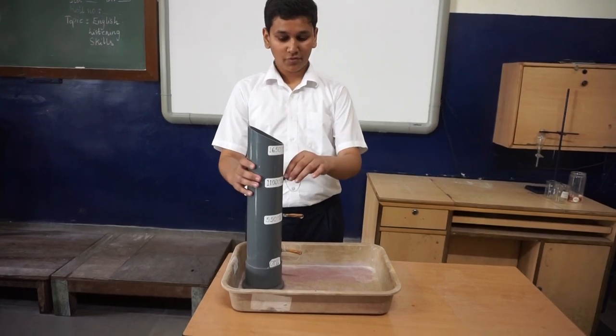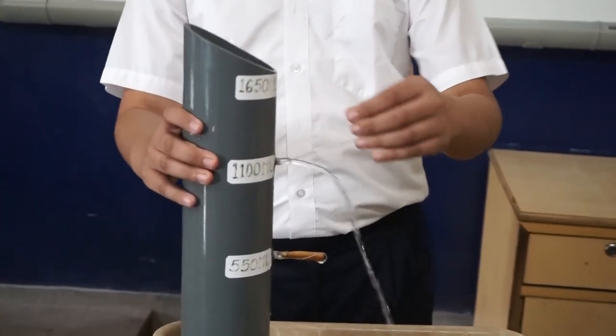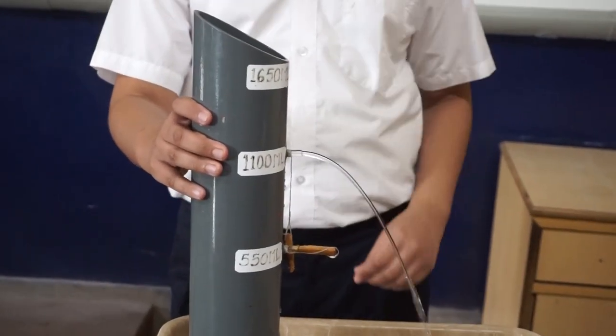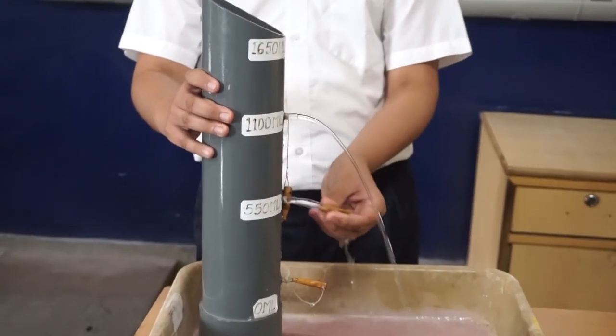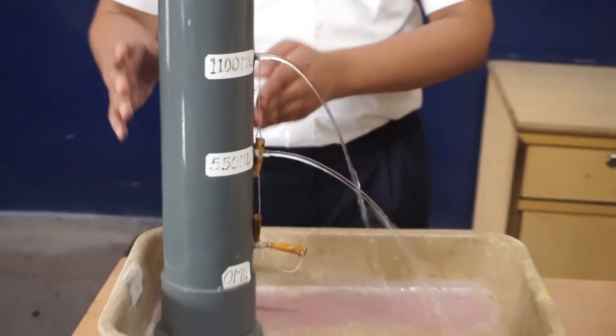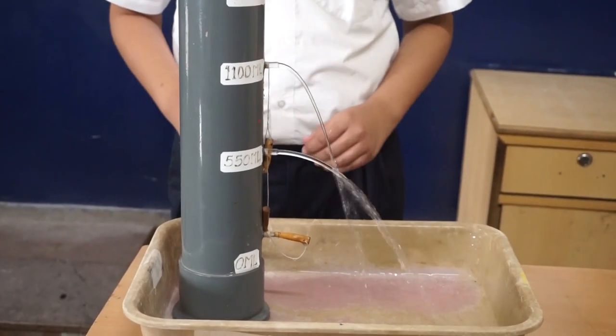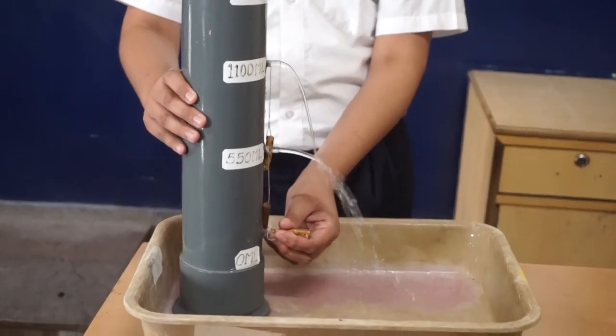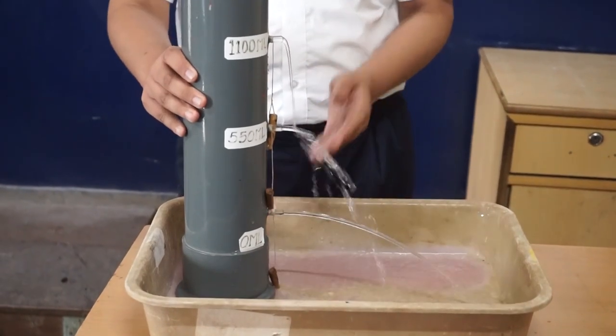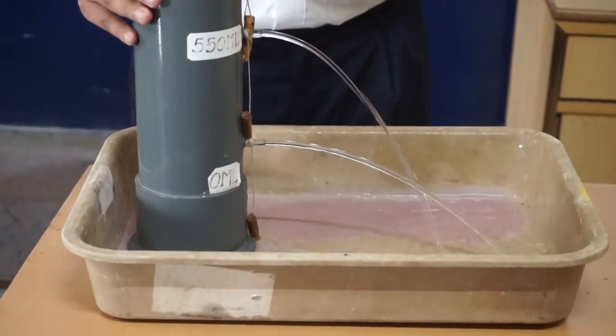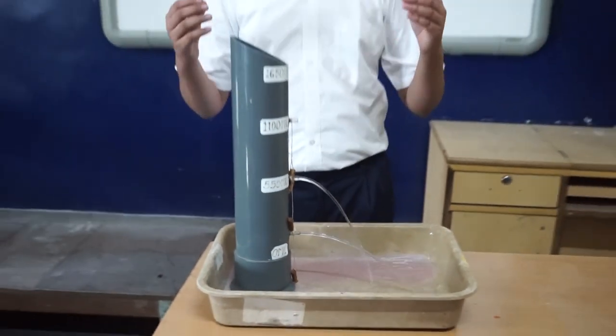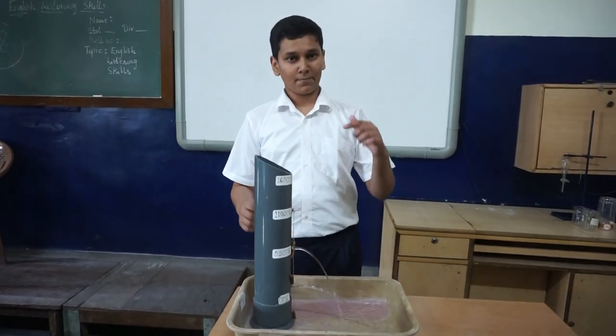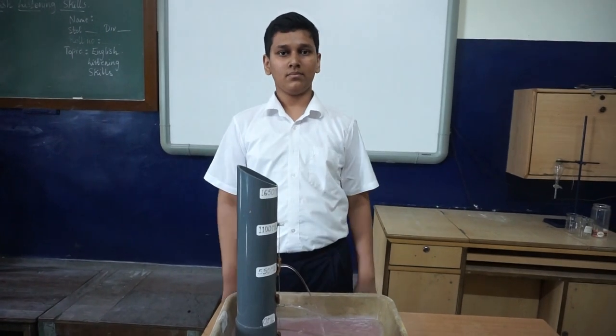So, let us find out. First, we will open the top hole. The water flows at an angle. Now, let us open the second layer. The water flows at an angle which is wider than the first one. Now, let us open the third layer. The water flows at an angle which is wider than the first and the second one. So, thus, we can conclude that the liquids exert pressure and pressure at the base is the maximum. Thank you.